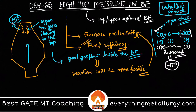Because solution loss is suppressed, there is no loss of coke taking place, so fuel efficiency increases. For example, previously you may use 100 kg of coke per ton of hot metal, but with high top pressure you may only consume 80 kg — saving cost. So the two important effects of high top pressure are: number one, increasing furnace productivity; and number two, increasing fuel efficiency by suppressing the solution loss reaction.